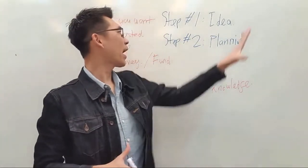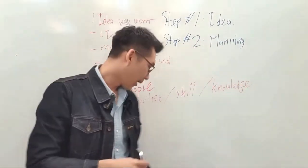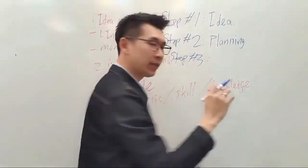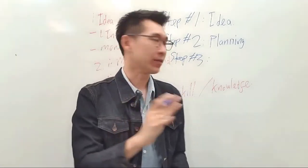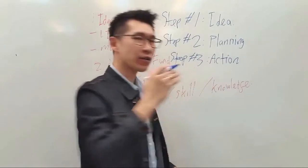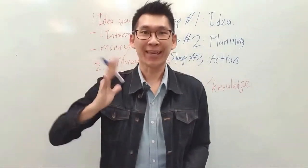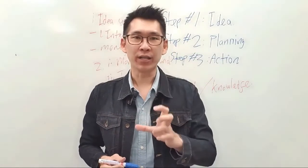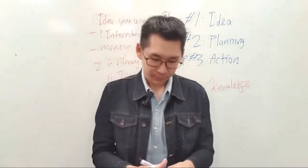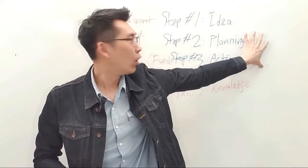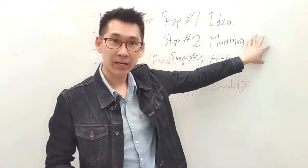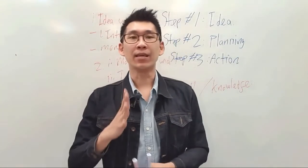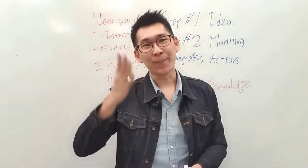Most people have an idea and then don't really go through a proper planning process — they jump straight to step three: action. We've been taught that taking action is important, and don't get me wrong — taking action is critical. It's a very important ingredient for success; without taking action, nothing happens. But people miss out on this planning step because it's the boring process. If you have the idea and then plan it well — knowing how much time you'll spend and so on — you'll have a much better chance of making your idea a reality and turning your million dollar idea into a million dollar business.